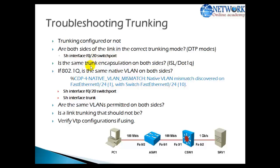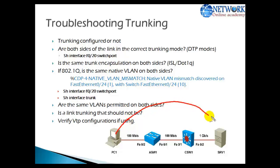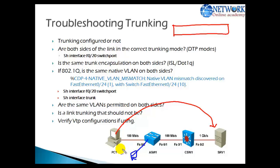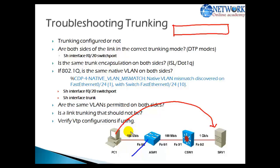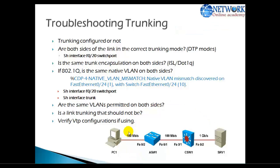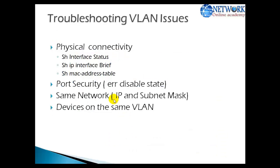In this section we are going to discuss troubleshooting your trunk links. Take an example where you have a user connected in your LAN and this user wants to communicate with a server or another device which is on a different switch. In our previous section we did troubleshooting where source and destination are on the same switch. Now if you have a user on a different switch, let's see what we need to keep in mind.